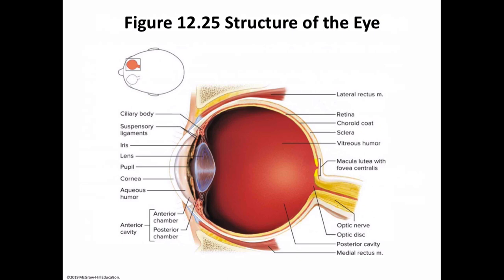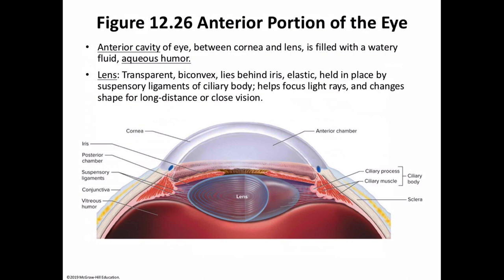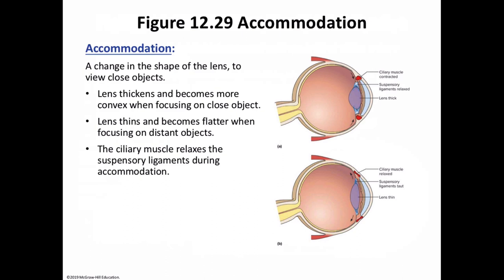Now let's get to the inner layer, the retina. But first, the anterior cavity of the eye between the cornea and lens is filled with the aqueous humor, which circulates from the posterior chamber through the pupil into the anterior chamber, providing nutrients and maintaining the shape of the front of the eye. The lens is a transparent biconvex structure that lies behind the iris. It is elastic and held in place by suspensory ligaments of the ciliary body, helping us focus and change shape for long-distance viewing — this is called accommodation.